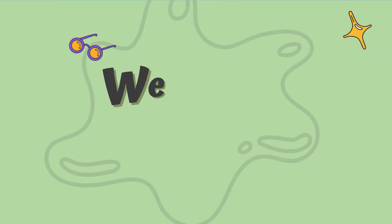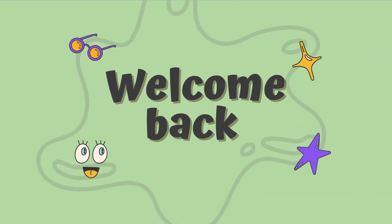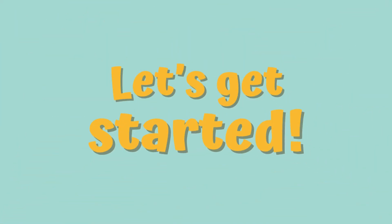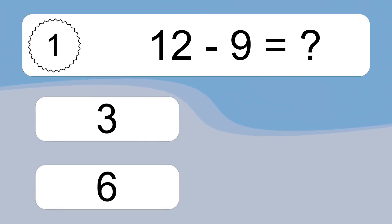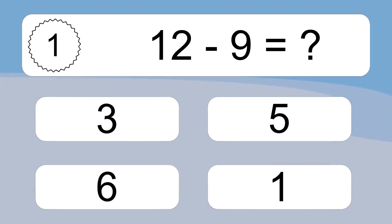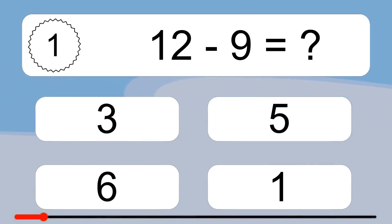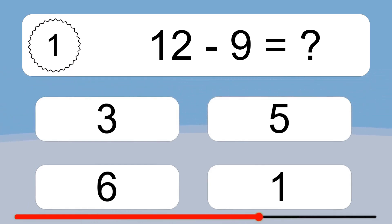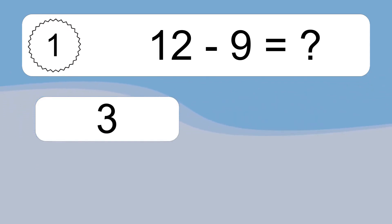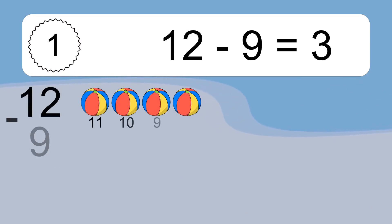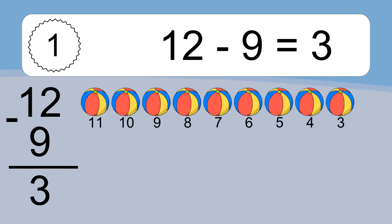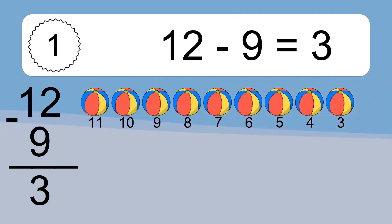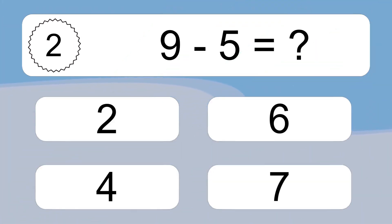Hey and welcome to a new video. Get ready to tackle fun challenges and test your skills. Let's get started! 12 minus 9 equals what? 12 minus 9 equals 3. Let's count it: 11, 10, 9, 8, 7, 6, 5, 4, 3.